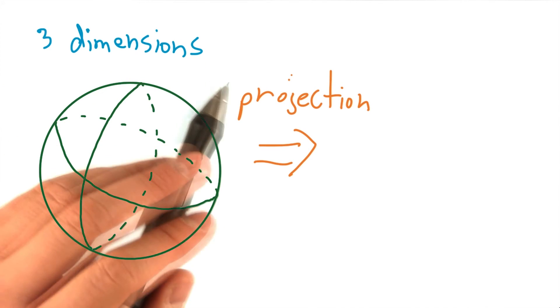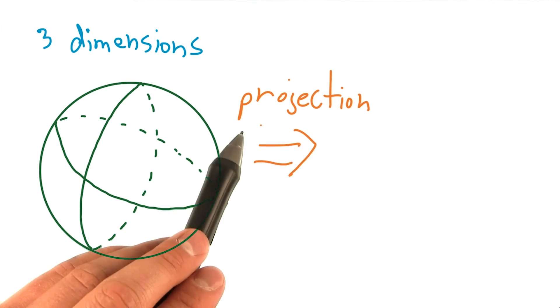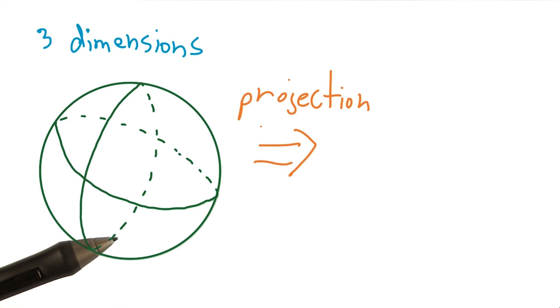The other, much more common approach, is to use a projection, which actually has been done for centuries, to draw maps on parchment or canvas.